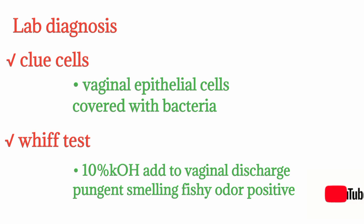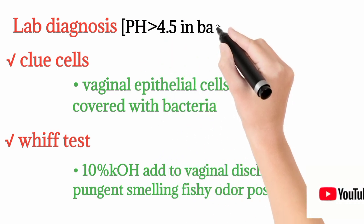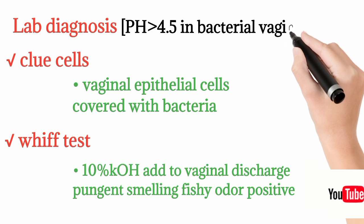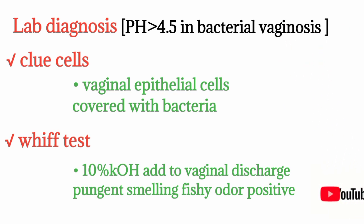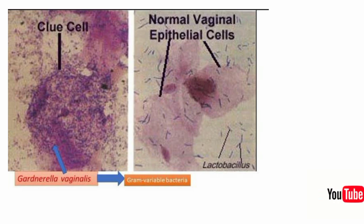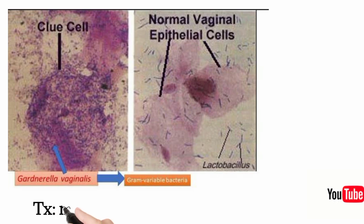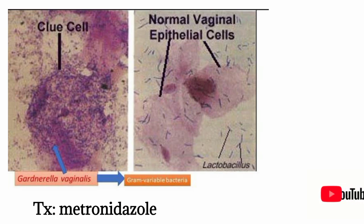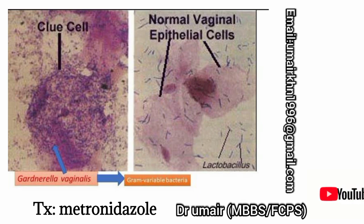Another diagnostic criterion is a vaginal pH greater than 4.5, indicating a shift toward alkaline — pointing to Gardnerella vaginalis. A figure shows normal vaginal epithelial cells versus clue cells heavily covered with bacteria. Treatment is usually metronidazole; no vaccine is available. That concludes gram positive rods.